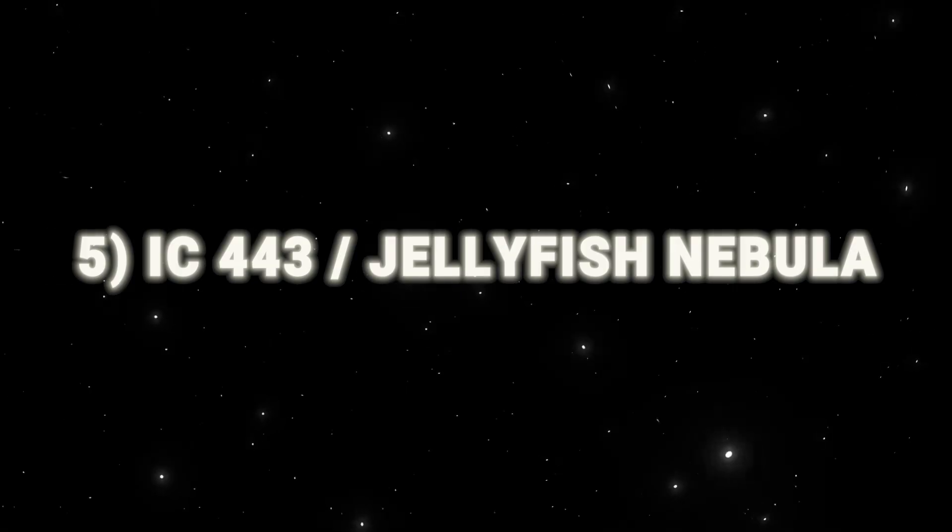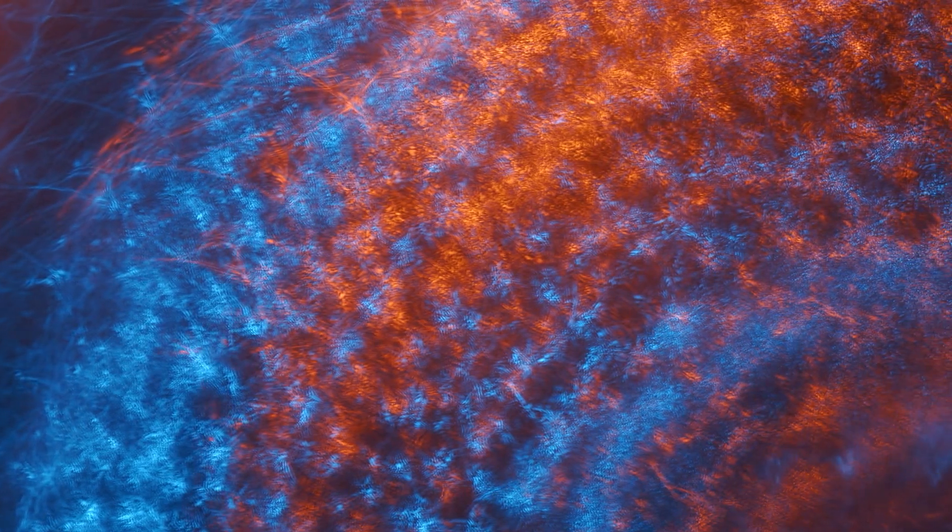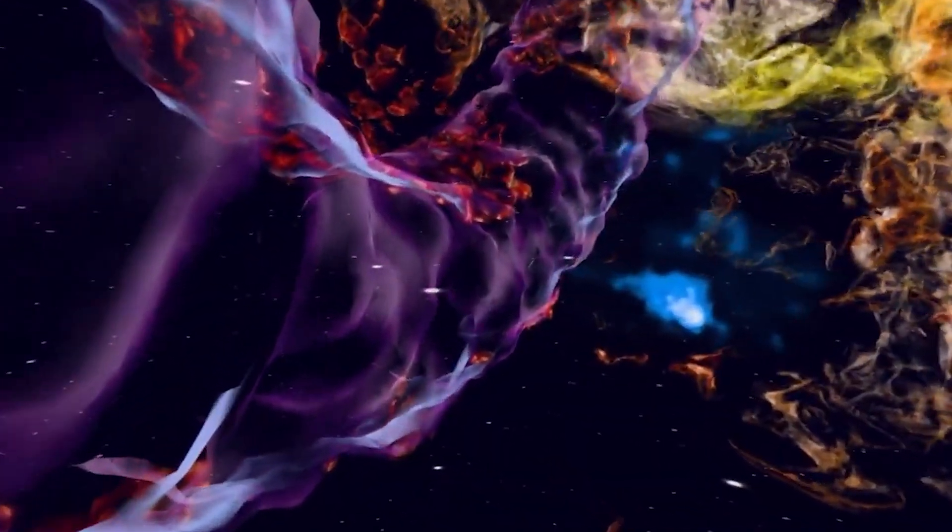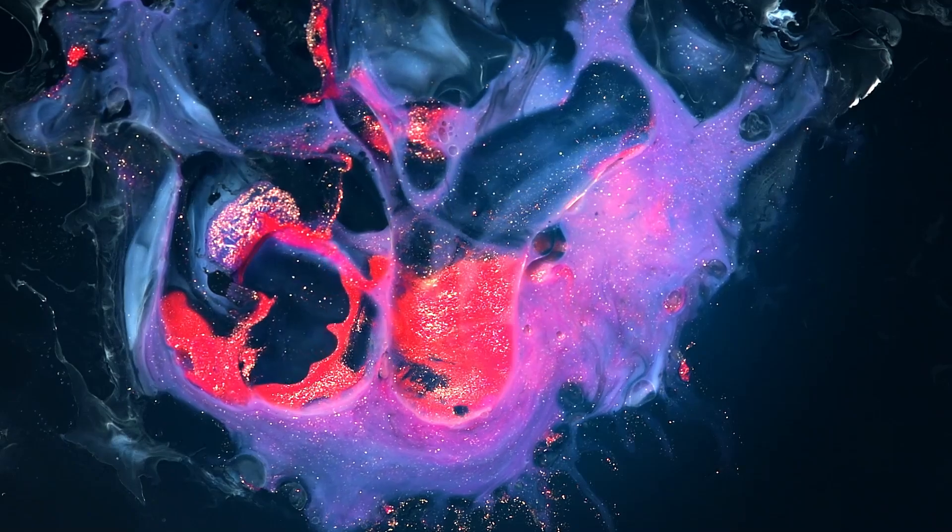5. IC-443 Jellyfish Nebula. IC-443, or the Jellyfish Nebula, is the scattered remains of a star that exploded long ago. Its vibrant composite image blends X-ray data and optical light, revealing the complex beauty of this supernova remnant.